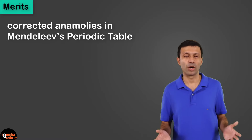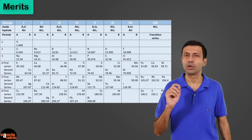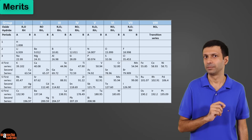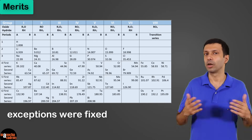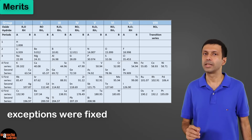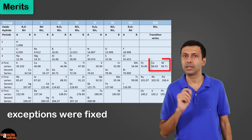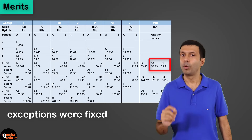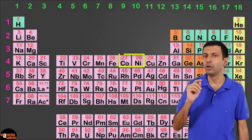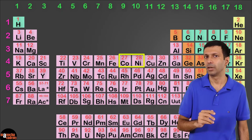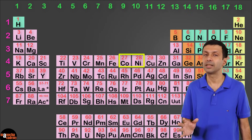The second point is Mendeleev had to make certain exceptions for some elements, but these are fixed in the modern periodic table. For example, the position of cobalt and nickel. Cobalt should come first because it has a lower atomic number as compared to nickel.